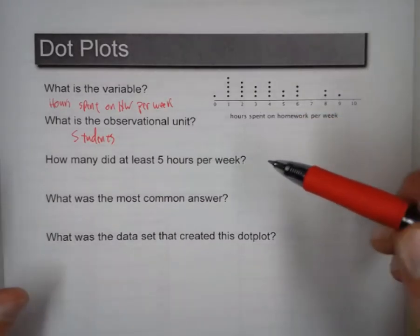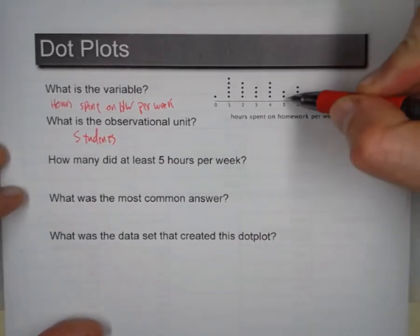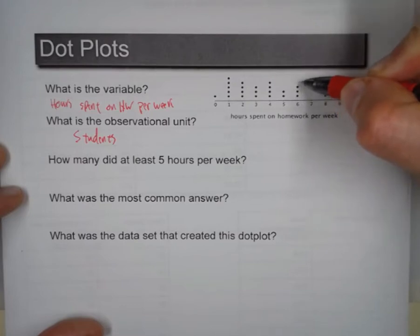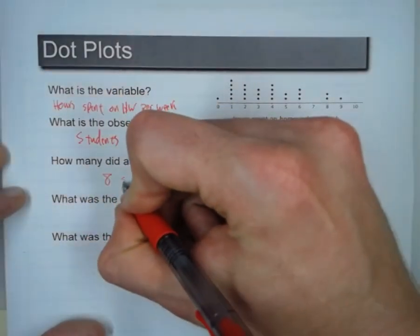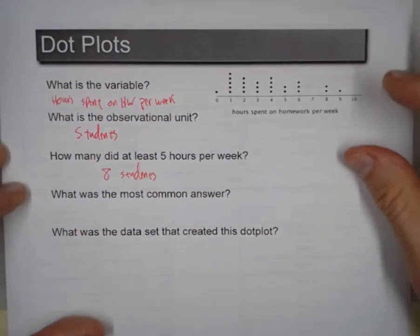Next question. How many did at least five hours per week? So that means five hours and up. So we count one, two, three, four, five, six, seven, eight students did at least five hours of homework per week.